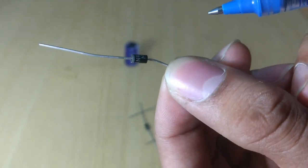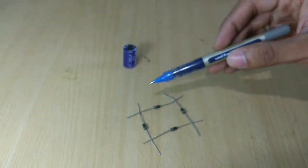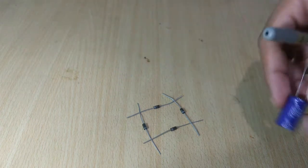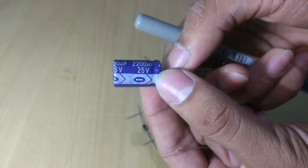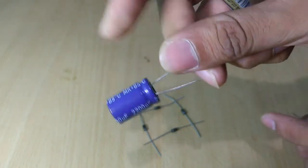Now we will connect the four diodes as a bridge so as to make a bridge rectifier. Then we will connect the capacitor to make a filter circuit or to make a filter.